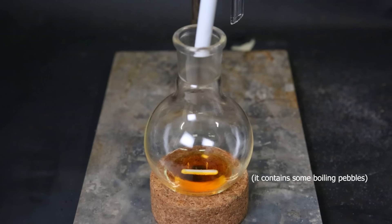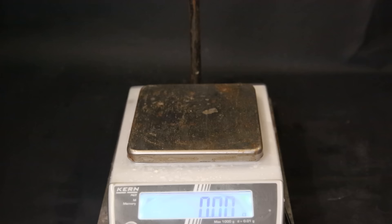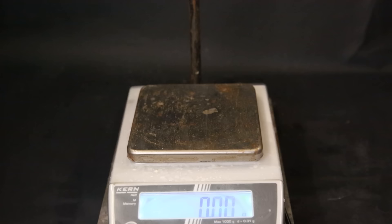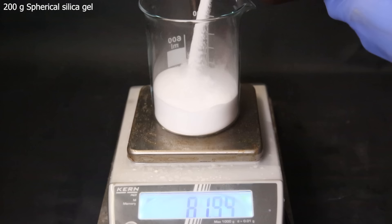So to separate the remaining furfural and levoglucosanone, I will have to do column chromatography. For this, I will use spherical silica gel. So I set up a beaker and weigh out 200 grams of the silica gel.